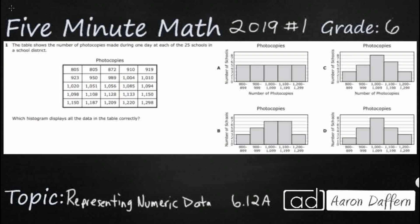We have a table here with 25 different values that represent the number of photocopies made one day at each of the 25 schools in the school district. One thing you need to note is that they have placed these numbers in order for us from the least, moving to the right and down to the next row, all the way down to the greatest. That's going to be very helpful when we are looking at this histogram.